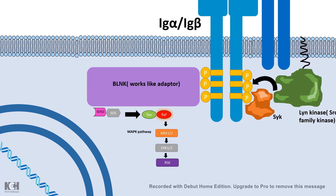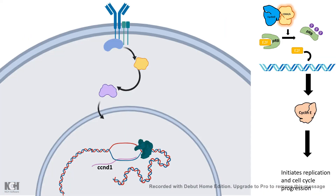MAP kinase signaling can be triggered when BLNK acts as an adapter. As a result of the MAP kinase cascade, the AP1 family of transcription factors can enter the nucleus and allow the transcription of several important genes. One such gene that is transcribed is CCND1, which codes for Cyclin D.